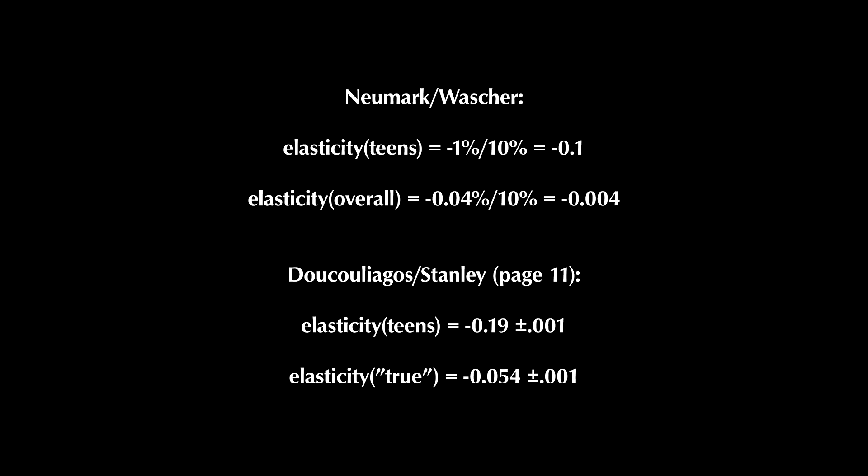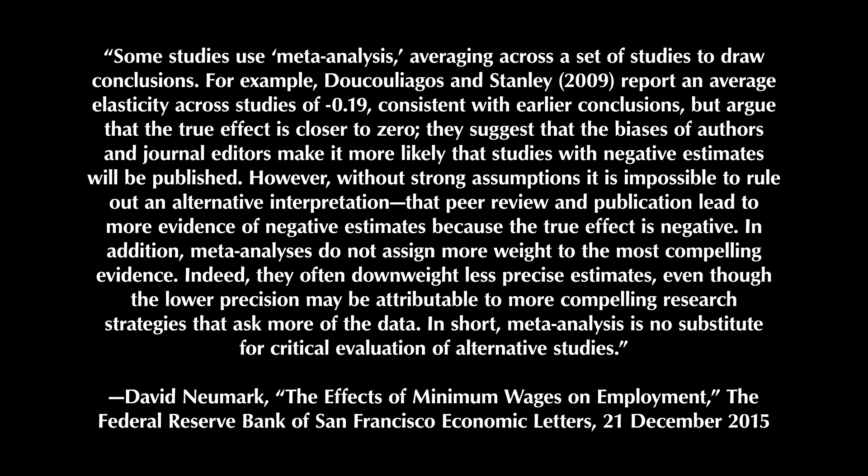Newmark wrote a response to this study in a 2015 article entitled 'The Effects of Minimum Wage Unemployment,' in which he said: some studies use meta-analysis averaging across a set of studies to draw conclusions. For example, Doucouliagos and Stanley report an average elasticity across studies of negative 0.19, consistent with earlier conclusions, but argue that the true effect is closer to zero. They suggest that biases of authors and journal editors make it more likely that studies with negative estimates will be published. However, without strong assumptions, it is impossible to rule out an alternative interpretation that peer review and publication lead to more evidence of negative estimates because the true effect is negative. In addition, meta-analyses do not assign more weight to the most compelling evidence — they often downweight less precise estimates, even though the lower precision may be attributable to more compelling research strategies that ask more of the data. In short, meta-analysis is no substitute for critical evaluation of alternative studies.